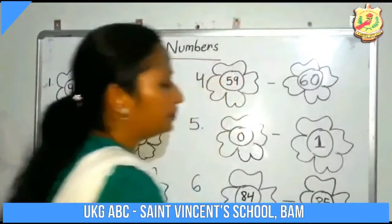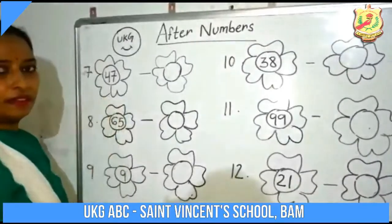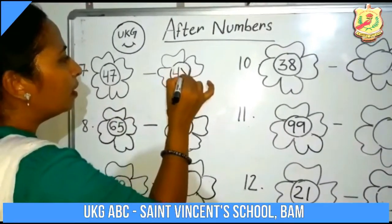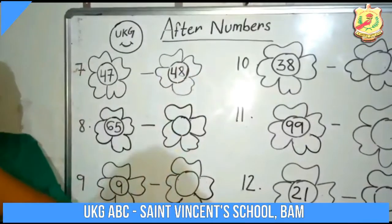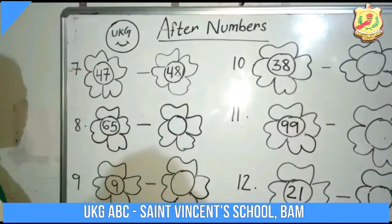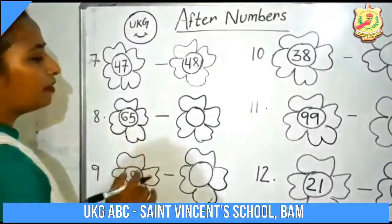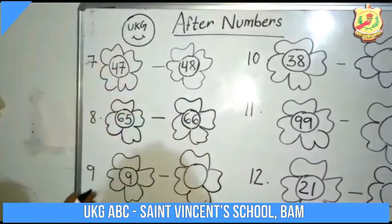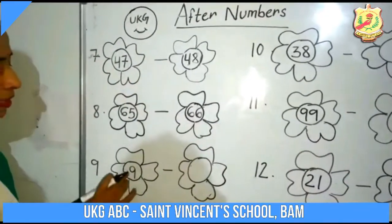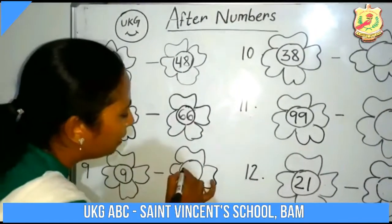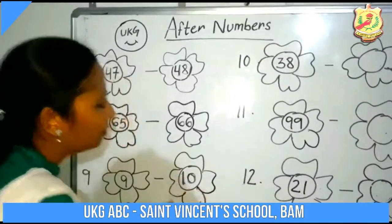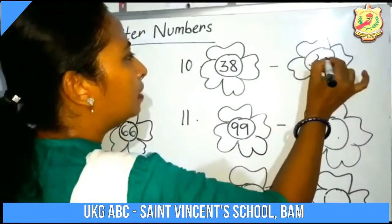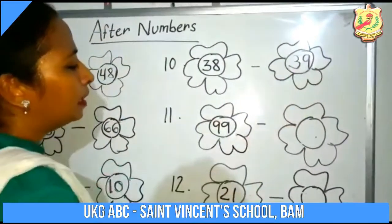The next number is 47. What comes after 47? 47 after is 48. Then 65 — after 65 is 66. Then 9 — children, what comes after 9? 10. Then 38 — after 38, which number comes? 39.